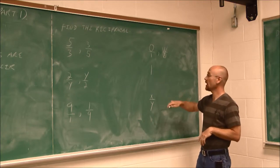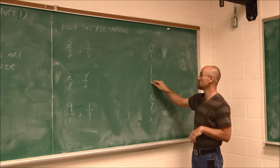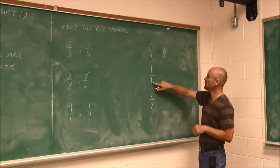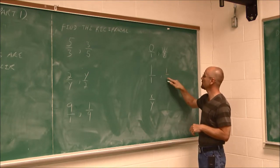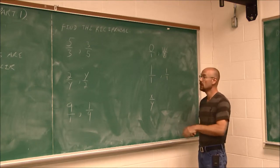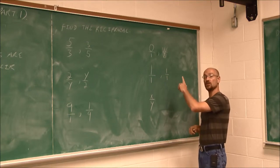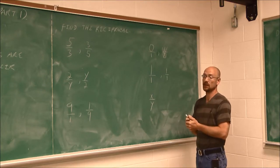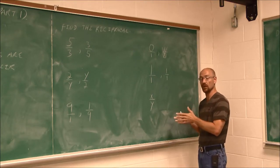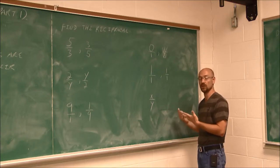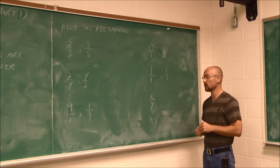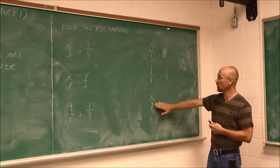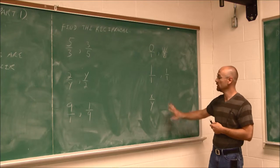What about 1? 1's kind of interesting, because I can think of 1 as being over 1. And if I take that reciprocal, move this to the top and this to the bottom, I still have 1 over 1. 1 is actually its own reciprocal. Because when we talked about the product of reciprocals equals 1, well, 1 times 1 will still be equal to 1. So 1 is its own reciprocal. Try to find the reciprocal for this one, x over y, on your own.